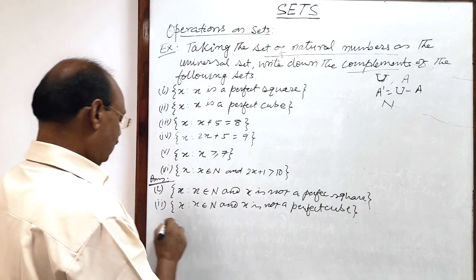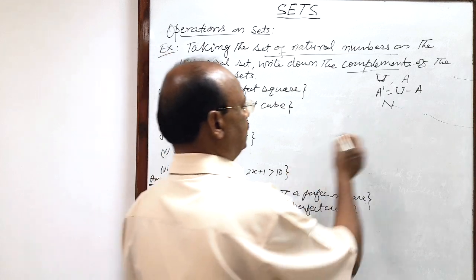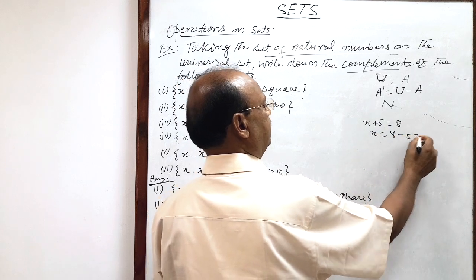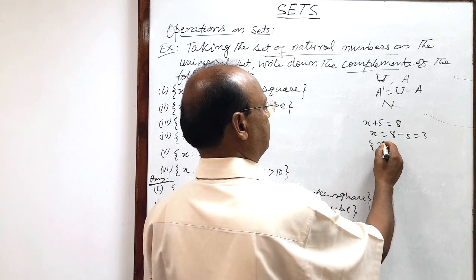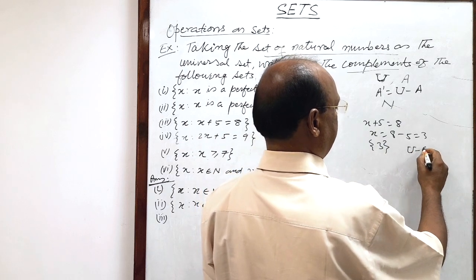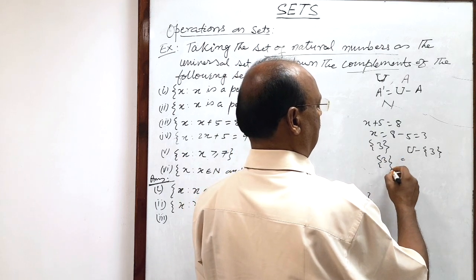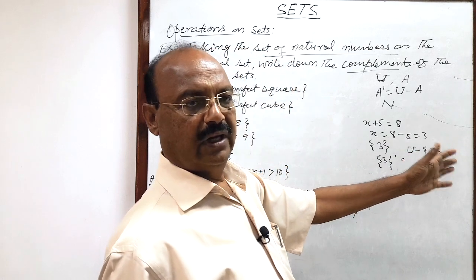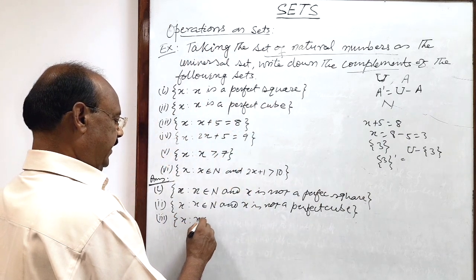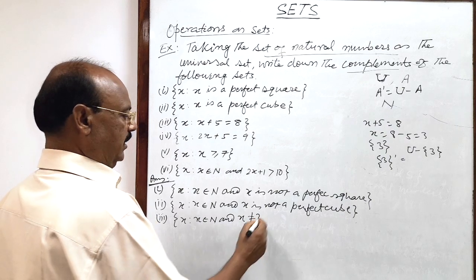Third question: x such that x plus 5 equals 8. You see the equation given is x + 5 = 8, so x equals 8 minus 5, which is 3. This is a set having only the element 3. So the universal set minus {3} gives the complement. The complement will be all natural numbers other than 3. So the answer is: x such that x belongs to the set of natural numbers and x is not equal to 3.